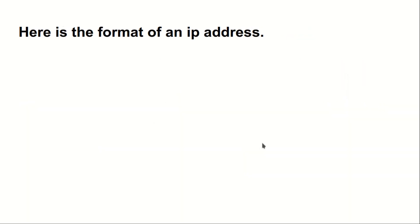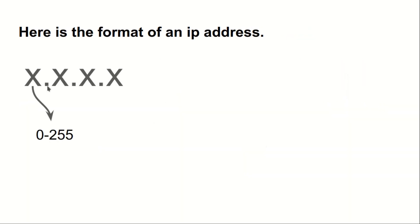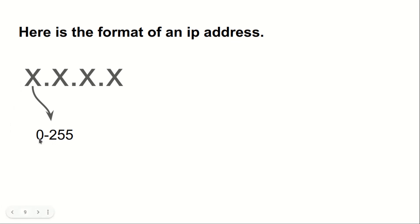Here is the format of an IP address: X.X.X.X — four parts. For every X, the number would be in the range starting from 0 to 255.